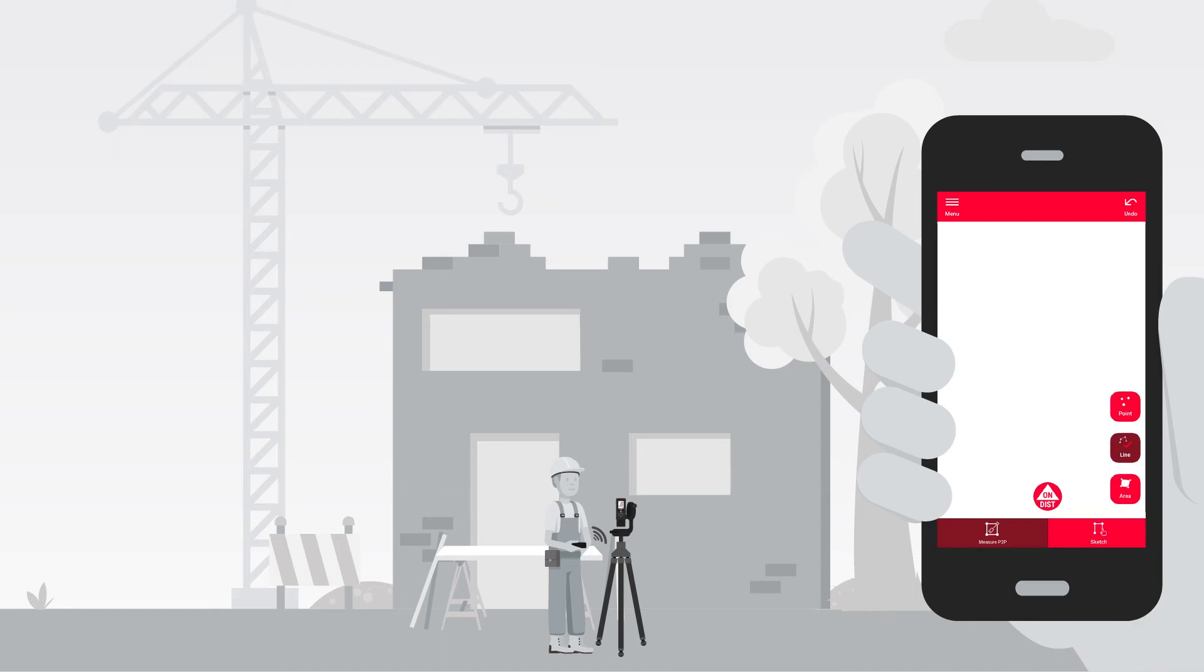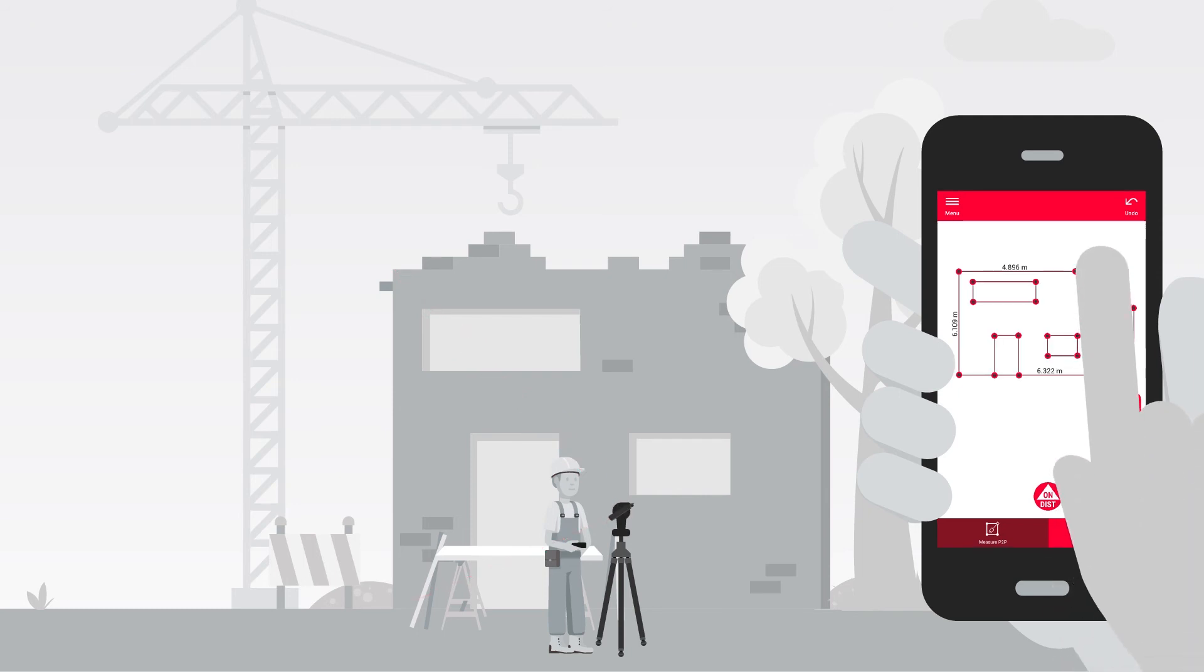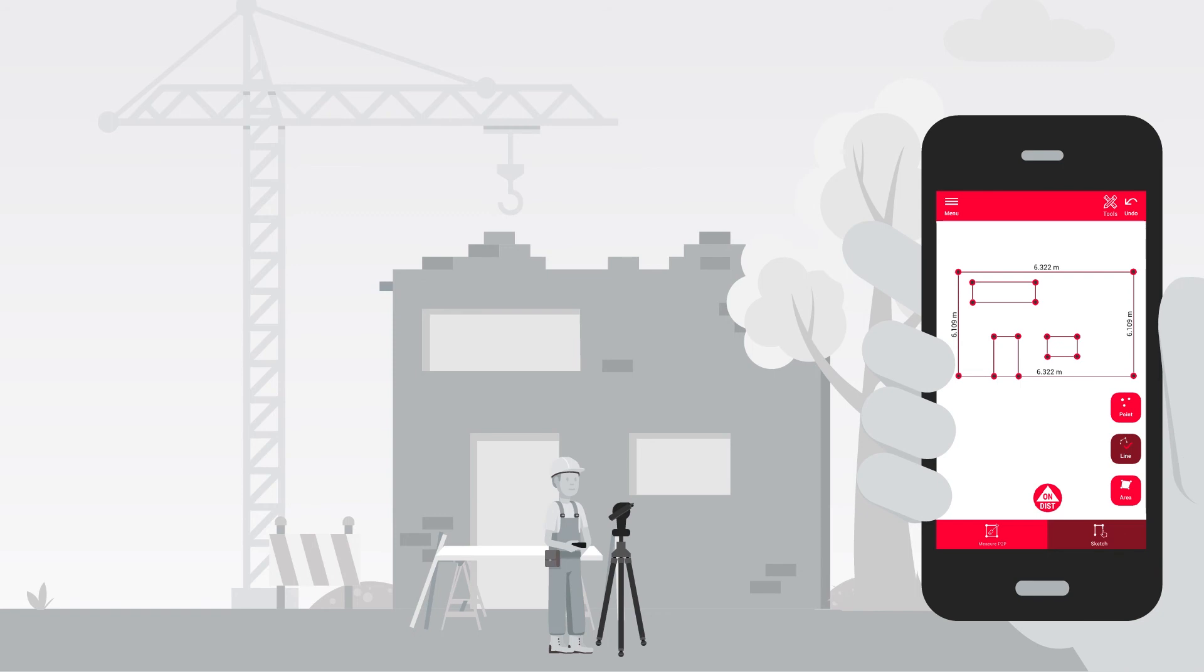Open the facade measurement function on your app and start measuring even problem areas like corners hidden behind objects. The app automatically calculates the corners and the plan appears on your smartphone or tablet.